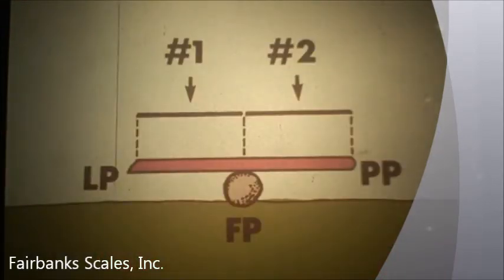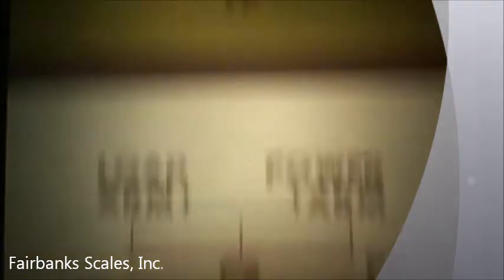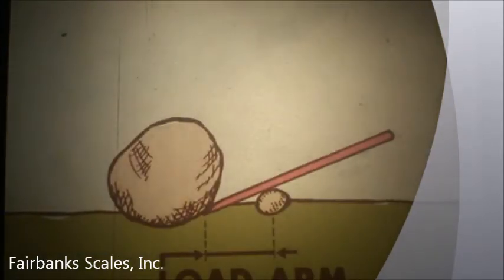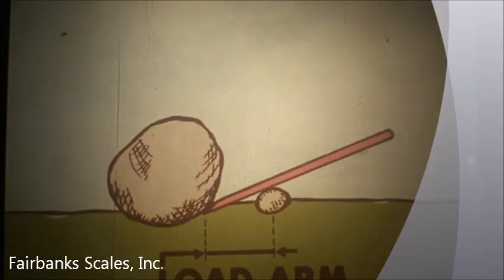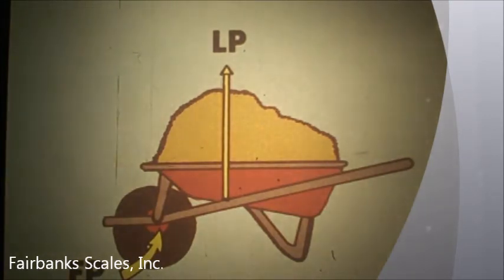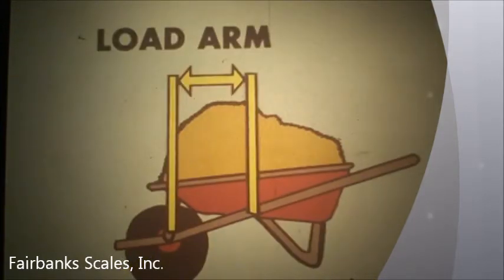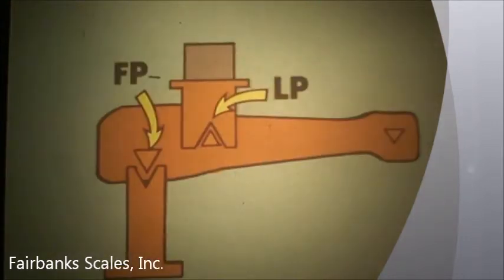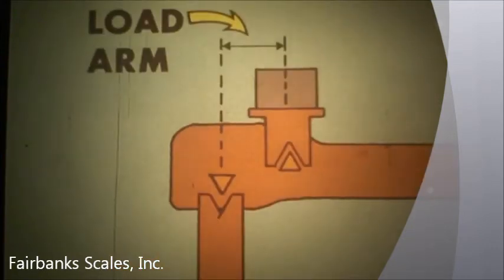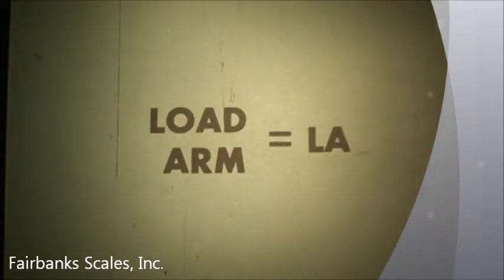In addition, all levers have two sections: a load arm and a power arm. The load arm is the distance from the fulcrum point to the load point. In the crowbar example, the load arm is the distance from the rock to the block. The fulcrum point is the wheel and the load point is the center of the load, so the load arm is the distance from the wheel to the center of the load. In this truck scale main lever, the load arm is the distance between the fulcrum point and the load point. Load arm is abbreviated LA.